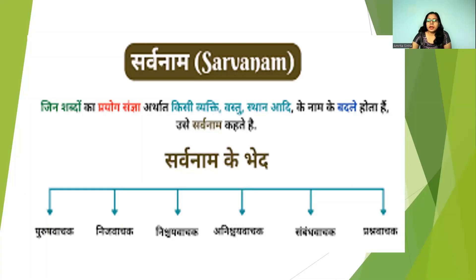What are the types of sarvnaam? Sarvnaam has six types. Let us see what these six types are: purush vachak, nij vachak, nischay vachak, anischay vachak, samvat vachak, prashna vachak.